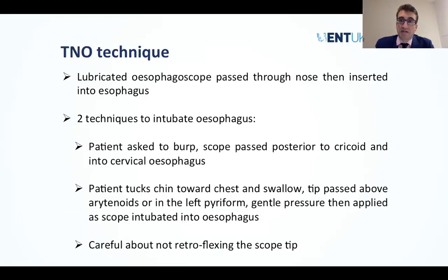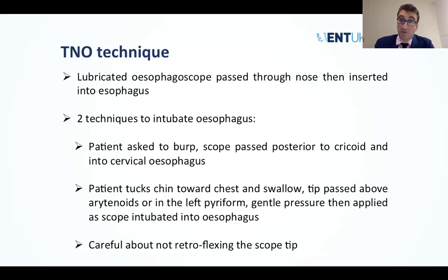For the technique itself: get the scope ready, set white balance and classical initial settings. For cannulating the esophagus there are two main ways. When you are just above the postcricoid area, you can ask the patient to burp — as the cricopharyngeus opens, you enter the cervical esophagus. Alternatively, ask the patient to tuck their chin toward the chest, pass the tip above the arytenoids, aim for the left pyriform sinus, and with gentle pressure intubate the esophagus.